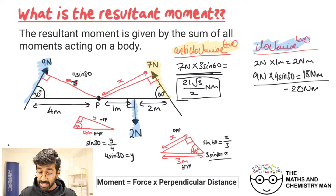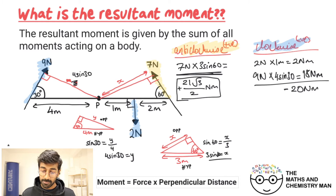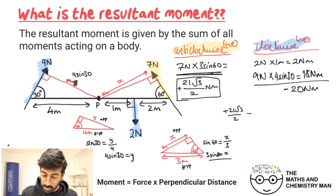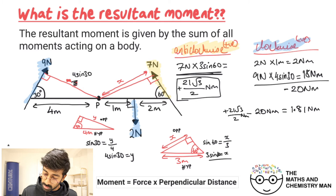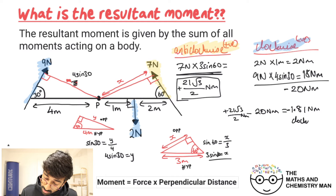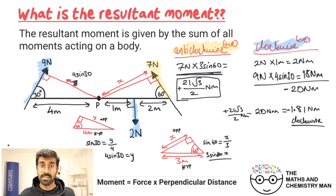The anti-clockwise is positive. Adding them: positive 21 root 3 over 2 Newton meters, take away 20 Newton meters. Typing that into a calculator gives a resultant of negative 1.81 Newton meters to three significant figures. The negative sign indicates this will turn in the clockwise direction.